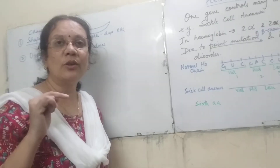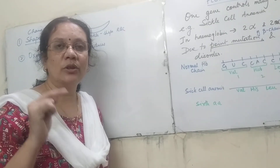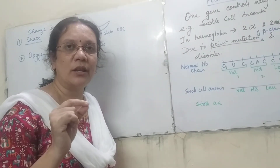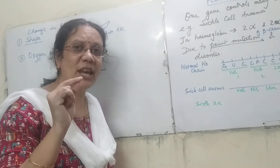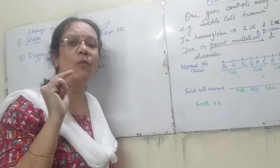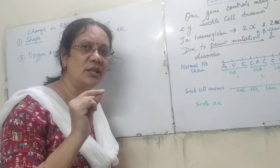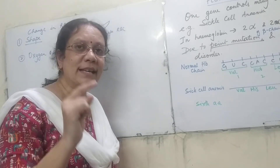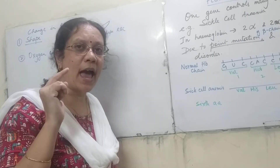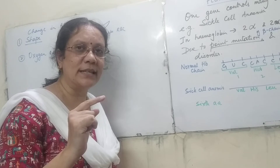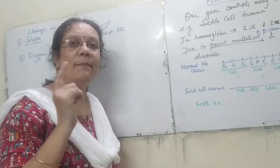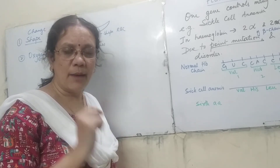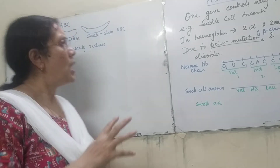Why does this happen? Because of a point mutation — a change in only one nitrogenous base — affecting the sixth amino acid in the beta chain of hemoglobin.